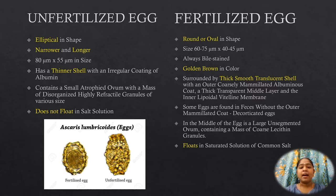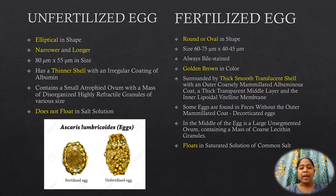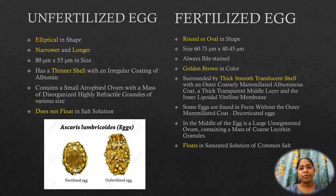The fertilized eggs are round to oval in shape, bile-stained and golden yellow in color, surrounded by a thick smooth translucent shell, a thick transparent middle layer, and an inner lipoidal vitelline membrane. Some eggs found in the feces without the outer mammillated coat are known as decorticated eggs. In the middle of the egg is a large unsegmented ovum containing a mass of coarse lecithin granules. Fertilized eggs float in a saturated solution of common salt.